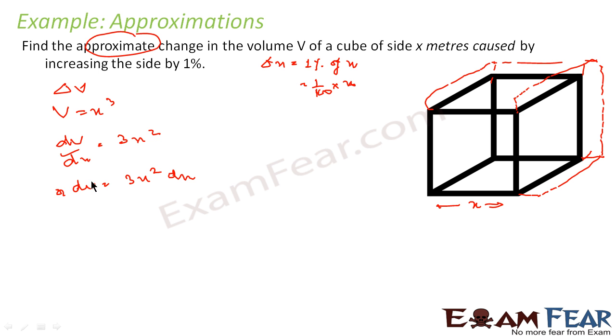Now since I have to find delta V, I assume that the change is very less. I can say that delta V is nothing but 3x squared delta x. Delta x I know is this. Let us put the value: 3x squared into delta x, that is 1 by 100 x, and that is nothing but 3x cubed by 100 meter cubed. And that is my answer.